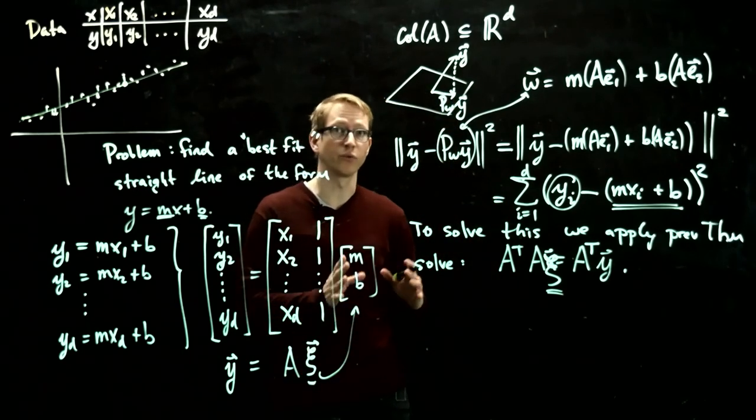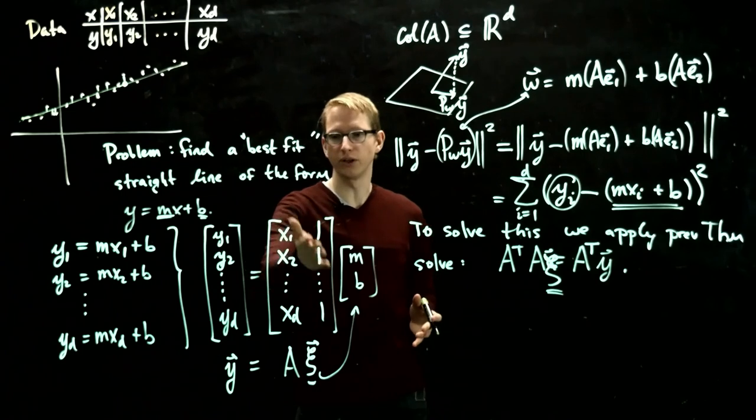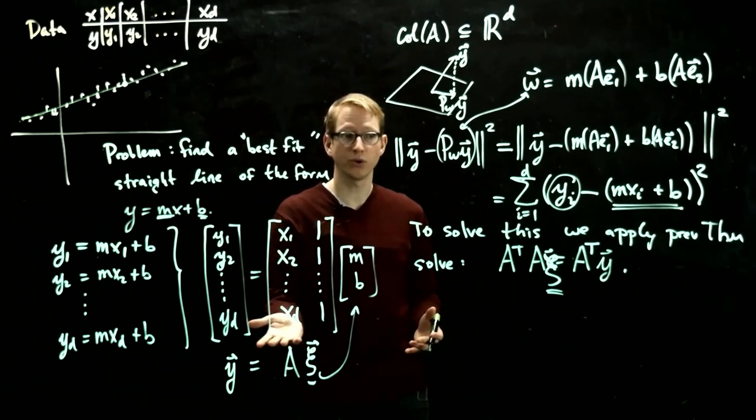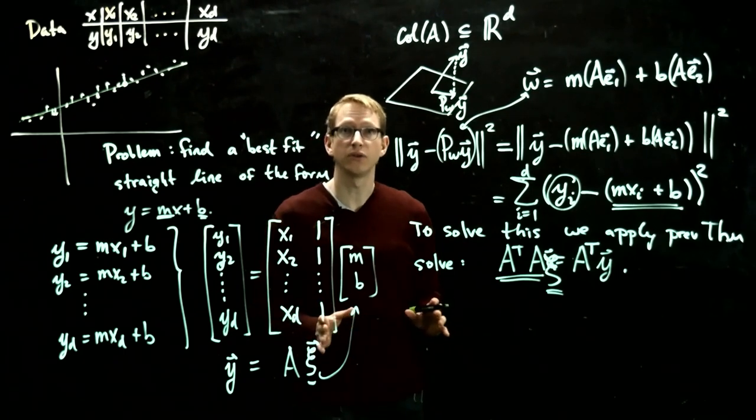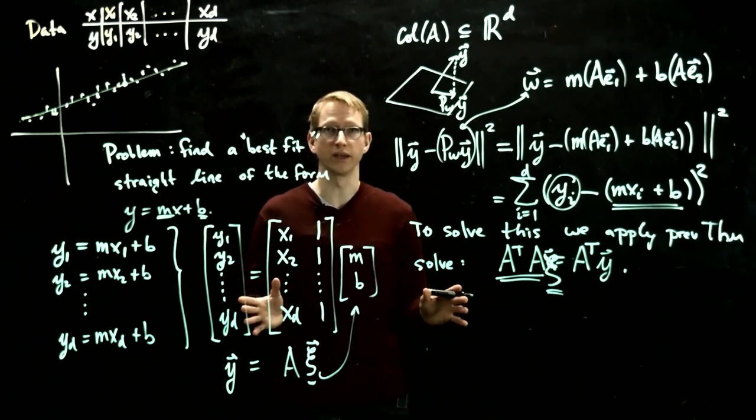So in order to do this, we have to write down what A is. We already know what A is. We have to write down its transpose. We have to multiply those two things. There's a lot of things we have to calculate. So let's do that on a fresh board space.